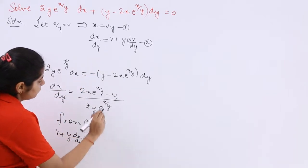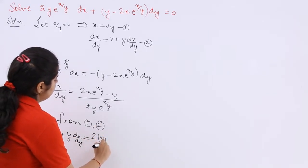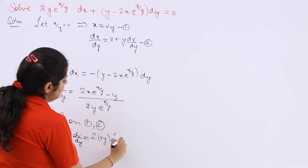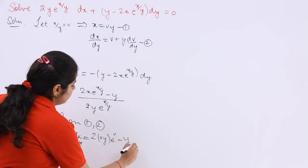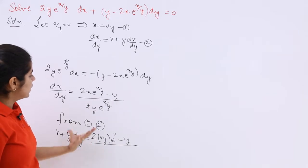dv upon dy is equal to 2 multiplied by x is vy. e raised to the power x upon y is v minus y. y has to remain in the form of y only. Divided by. Divided by what you can do?